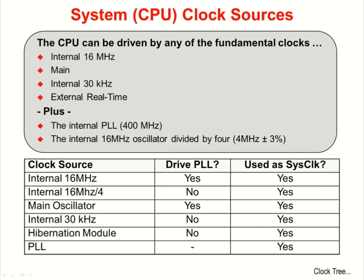You can't run the CPU at 400MHz — dividers limit you to 80MHz and below. We also have a divider on the internal 16MHz oscillator that provides 4MHz plus or minus 3%. You have 6 different clock sources that can drive the CPU, but only the internal 16MHz and main oscillator can drive the phase lock loop.